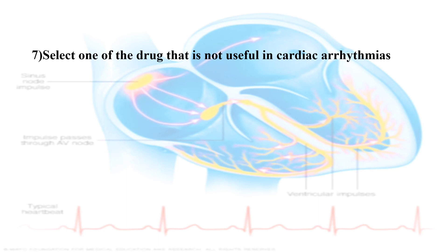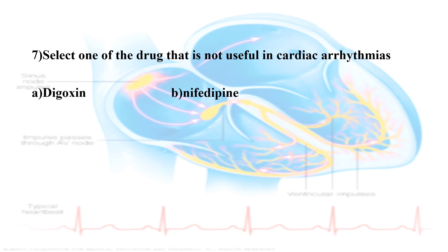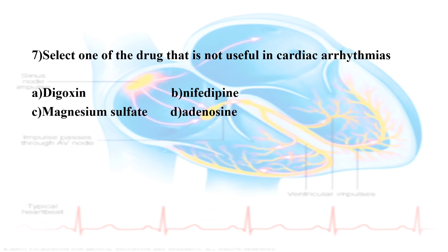Seventh question: Select one of the drugs that is not useful in cardiac arrhythmia. The options are: Digoxin, Nifedipine, Magnesium sulfate, Adenosine. The correct answer is Nifedipine. Nifedipine is a calcium channel blocker that acts on smooth muscle rather than cardiac muscle, so it is not used in cardiac arrhythmia.